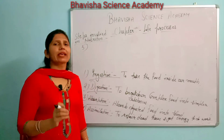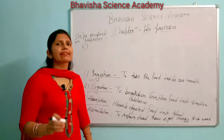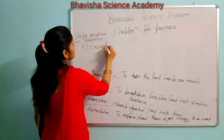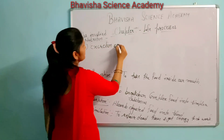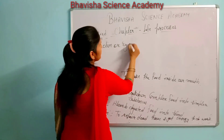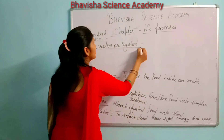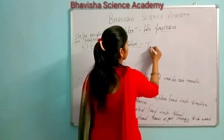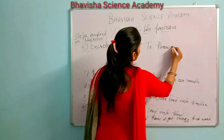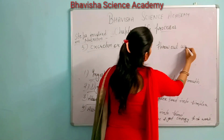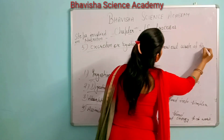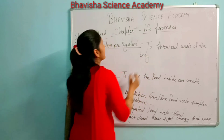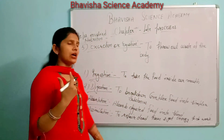The last step is ejection or excretion. The undigested waste will go out of the body — that is known as ejection or excretion. To throw out the waste of the body is called ejection.